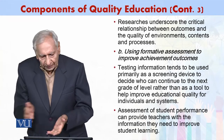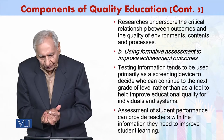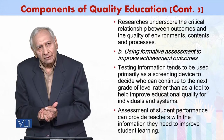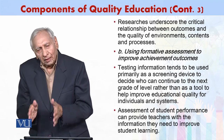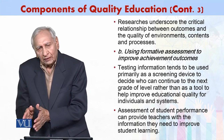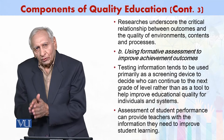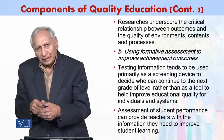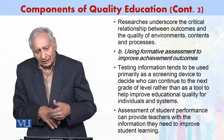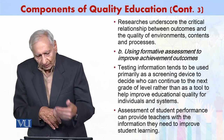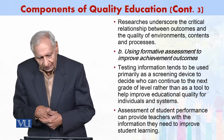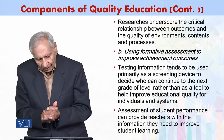Researchers underscore the critical relationship between outcomes and the quality of involvement, contents, and processes. We may have to look into other things as well, such as the environment, school environment, the course content, and the processes — what goes on in the classroom.